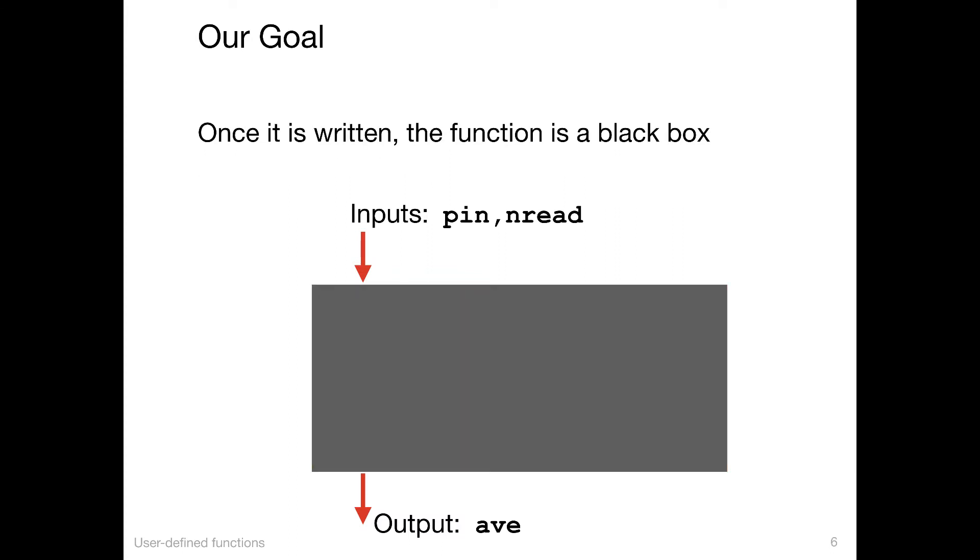When we're done, we could treat this as a black box. The calculations are not mysterious or complex. But when we are using this function in another context, we don't need to worry exactly how the sum is accumulated, what the variable name is that stores the sum, or even the variable name that stores the average. We just know that we supply the appropriate inputs, pin and nread, and we get an output.